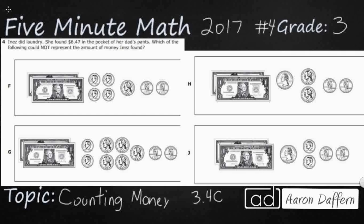So we have a collection of bills and coins here. We have Inez, she is doing laundry, and we've got just one total right there, $6.47 in the pocket of her dad's pants. Which of the following could not represent the amount of money that Inez found? So three of these are going to equal $6.47, one of them will not, that's the one we're looking for.